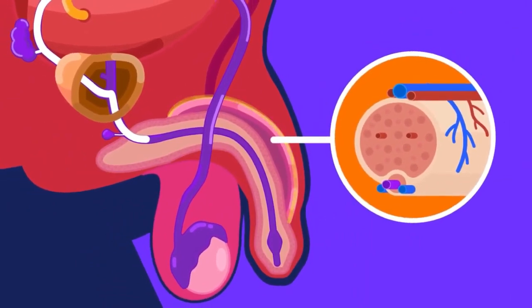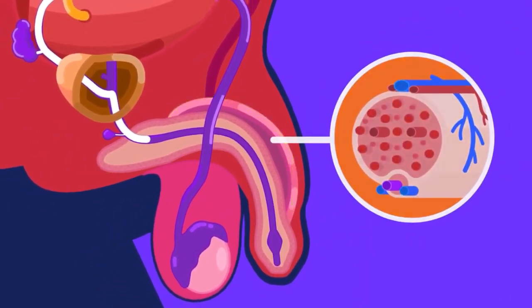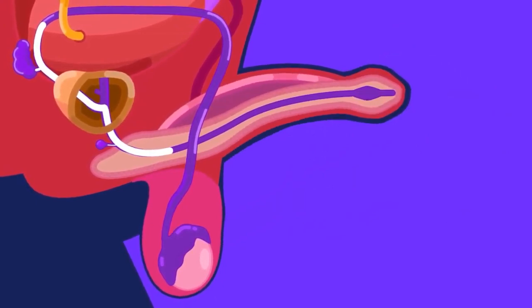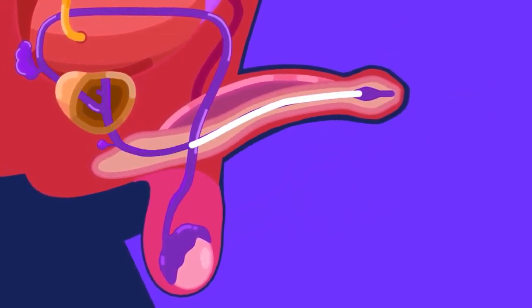When stimulated, the blood will fill the spaces and the penis will become erect and hard. Given enough stimulation, ejaculation or the release of semen can happen.